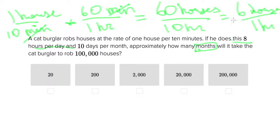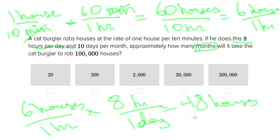So if we have only 8 hours per day where we're robbing houses and we're robbing 6 houses per hour, that's the same as saying that we are robbing 48 houses per day.